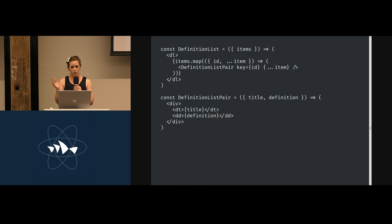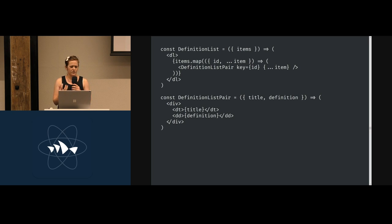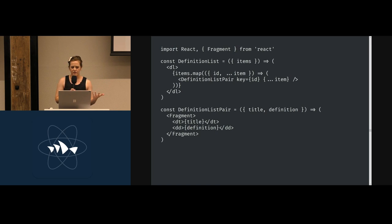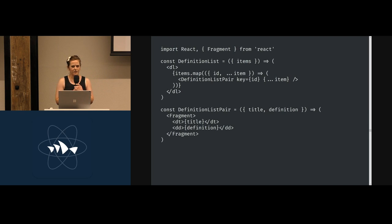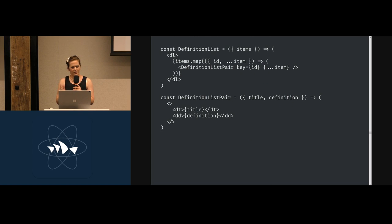For so long in React, you had to have a div as the root component, which broke HTML validity — people would just wrap a div around dt and dd, making it no longer technically correct. Now we have fragments, a new way to wrap elements without adding anything to the DOM. You can use React.Fragment or the shorthand empty tag syntax, so our root element doesn't require an actual DOM node.